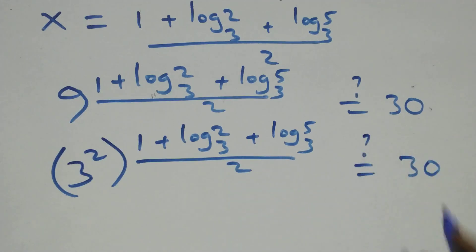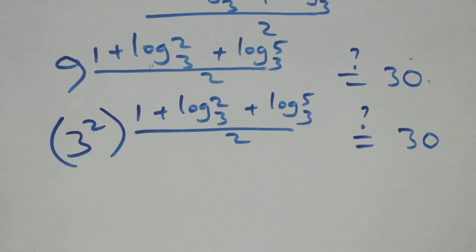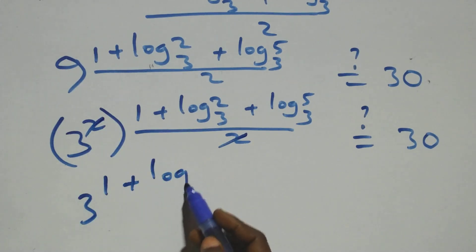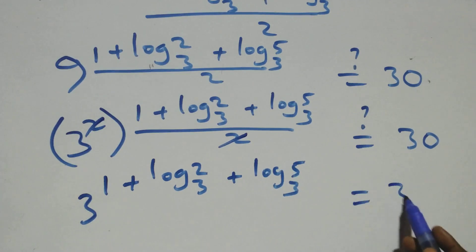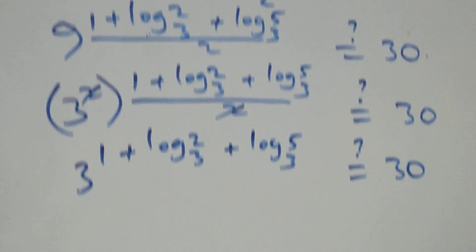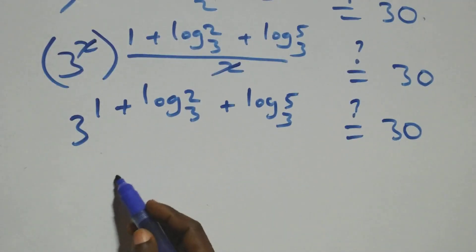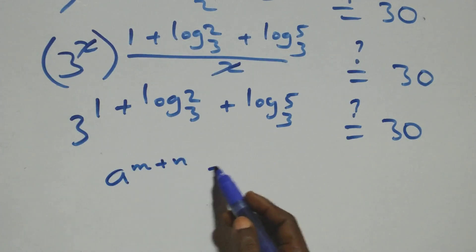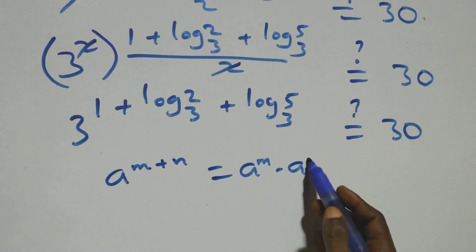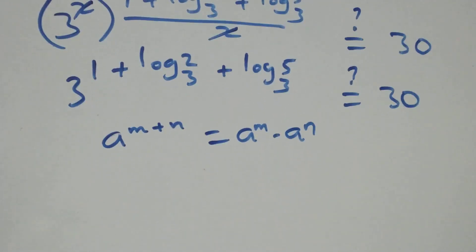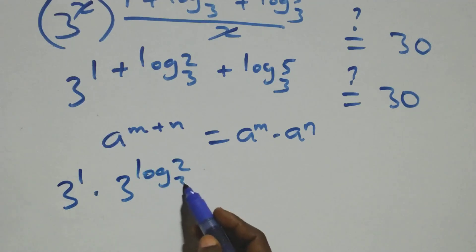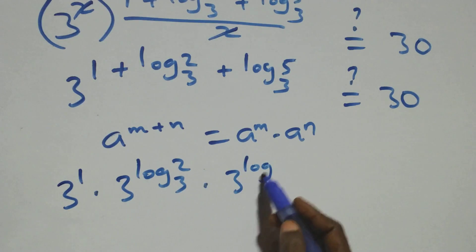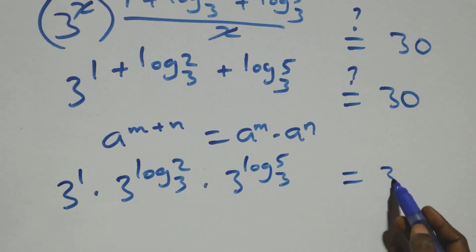The power multiplies through and the two in the denominator cancels with the 2 from log(3 squared), leaving 3 raised to power (1 plus log 2 base 3 plus log 5 base 3) equals 30. Applying the law of indices — a raised to (m + n) equals a^m times a^n — we get 3^1 times 3^(log 2 base 3) times 3^(log 5 base 3). Using the identity a^(log_a b) = b, this becomes 3 times 2 times 5.